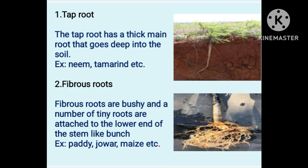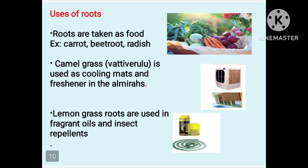Carrot, beetroot, and radish are roots that are taken as food items. Some roots like vetiver are used as cooling mats during summer and as a freshener.